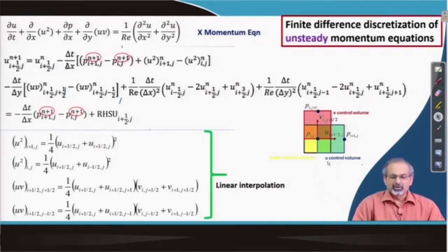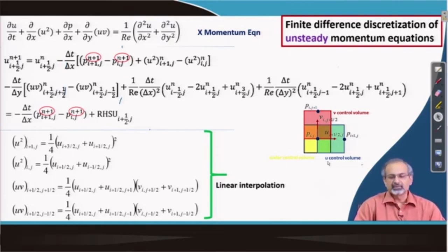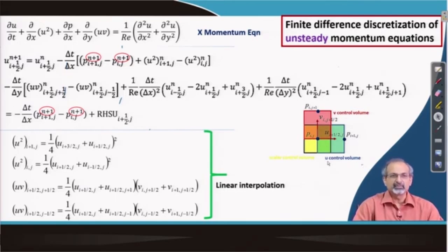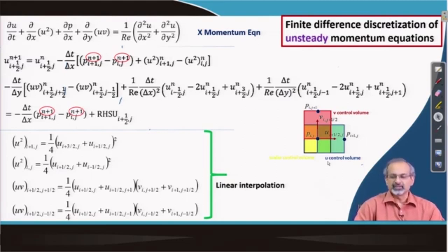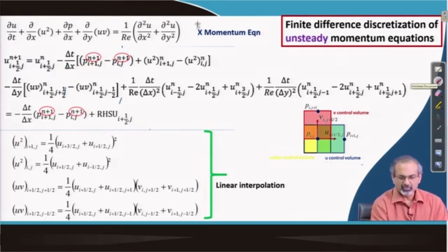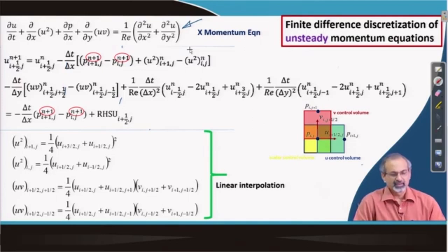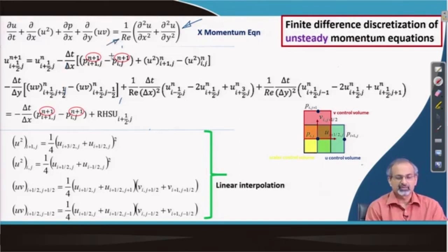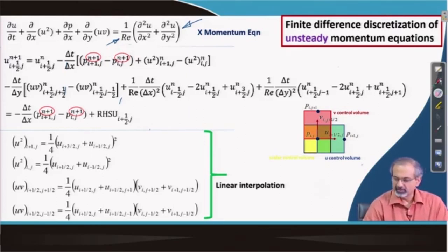We were discussing finite volume implementation through the SIMPLE scheme. Let us also discuss finite difference implementation. If you recall, we discussed a steady set of momentum equations in the SIMPLE scheme. Now we will also incorporate the time-dependent term into the momentum equations. With a finite difference discretization of unsteady momentum equations, let us see how the calculations can be accomplished. On top you have the x-momentum equation in unsteady, non-dimensionalized form — that is why the Reynolds number appears on the right-hand side.